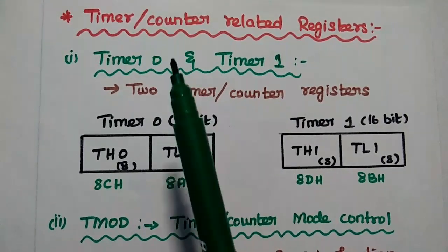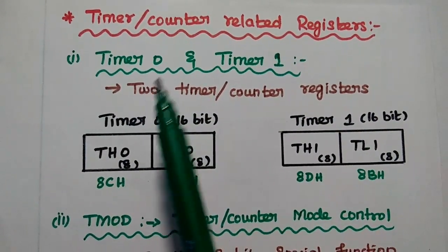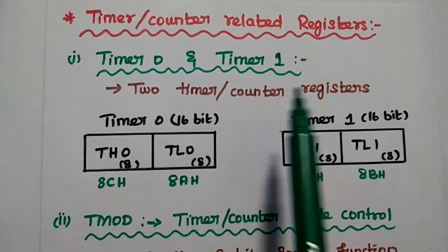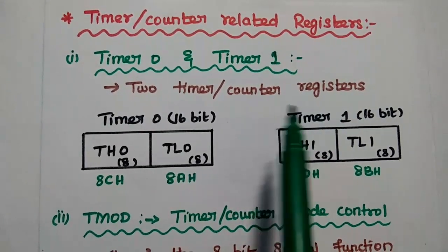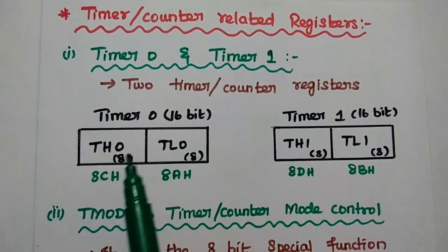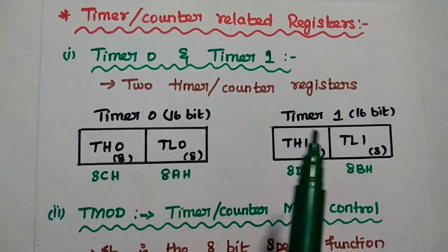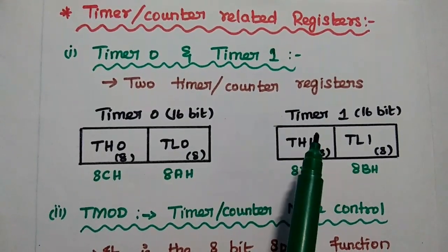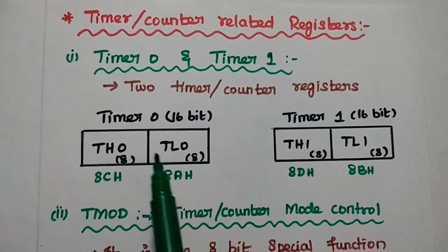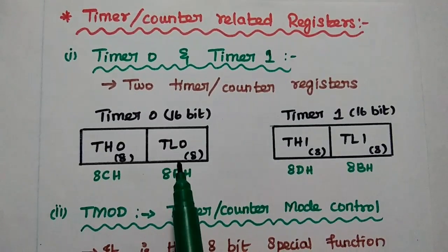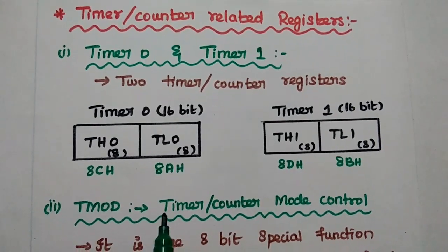The next category is timer counter related special function registers. The first ones are timer 0 and timer 1 registers. These are 16-bit timer counter registers, each consisting of two 8-bit registers: TH0 and TL0 for timer 0, and TH1 and TL1 for timer 1. Each sub-register is 8-bit, making the combined register 16-bit. The addresses are given for each respective register.